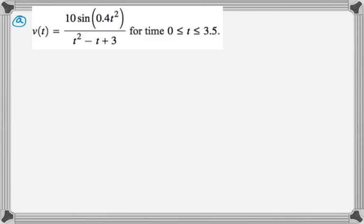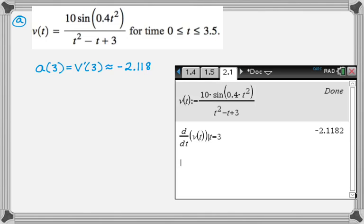The first question is about the acceleration of the particle at t equals 3, so we're trying to find acceleration at 3, and that's going to be the derivative of velocity at 3, and then I just grabbed a calculator and had it tell me the answer. So that's approximately negative 2.118, and here's a screenshot of what I did, so I defined the function, and then I just had the calculator take the derivative. All right, let's move on to part b.